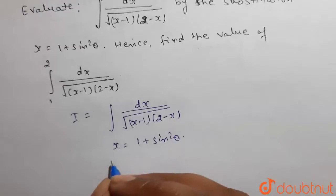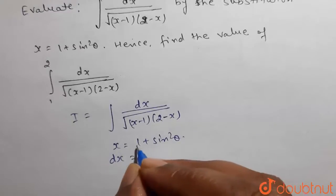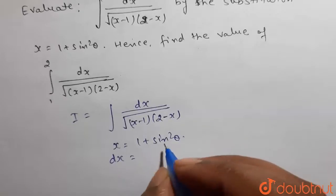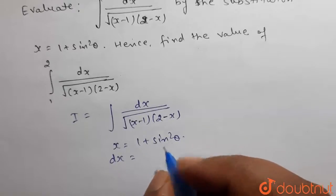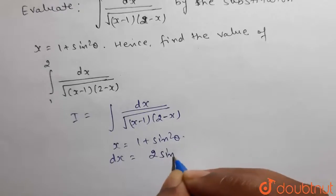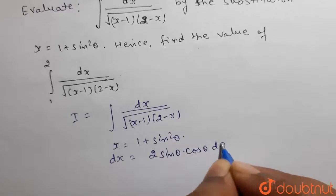Now, differentiating both sides we get dx equals to — differentiation of 1 is 0, plus differentiation of sin square theta is 2 sin theta into cos theta — then d theta.